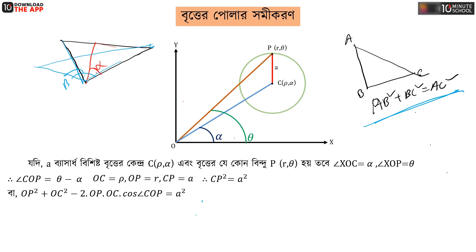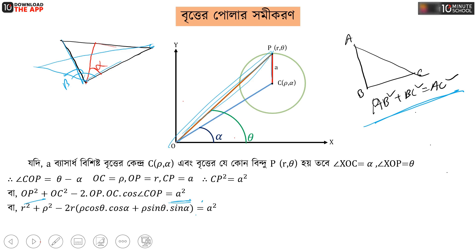We have to say that this triangle: op squared plus oc squared minus 2·op·oc·cos(cop) equals alpha squared. If we look at opr, then oc, then opr has to look at rho. So r squared plus rho squared — then ocr is now a constant — minus 2r·rho·(cosθ·cosα + sinθ·sinα) equals a squared.